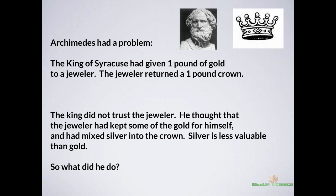I'm going to start today with a story. There's a man named Archimedes, and he had a bit of a problem to solve. The King of Syracuse had a crown made by his jeweler. It was a one-pound crown made of gold, and he wasn't sure if the jeweler ripped him off — meaning the jeweler could have mixed in some silver, still had the crown equal one pound, kept some of the gold for himself, and not really let the king know.